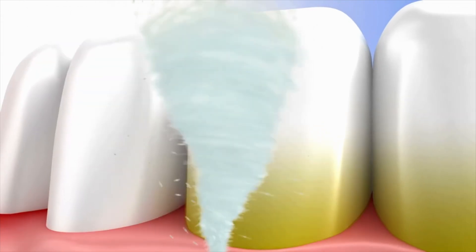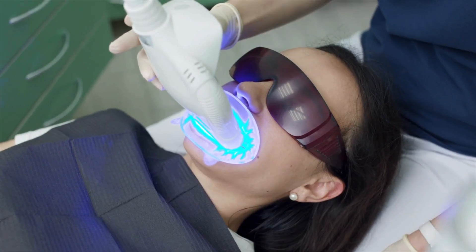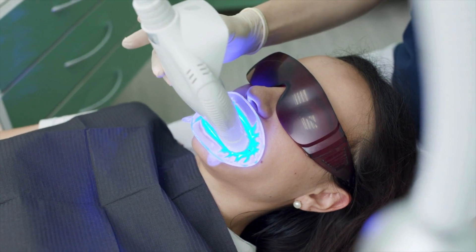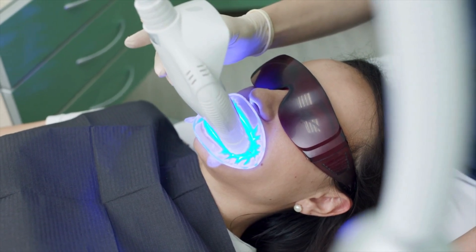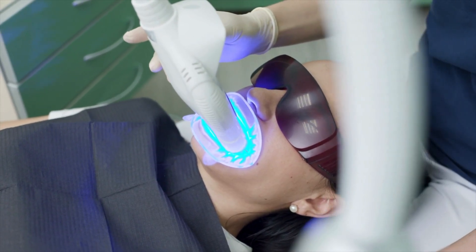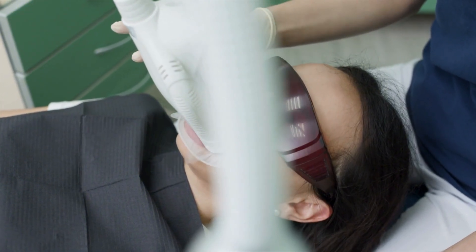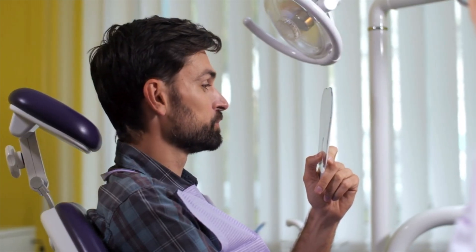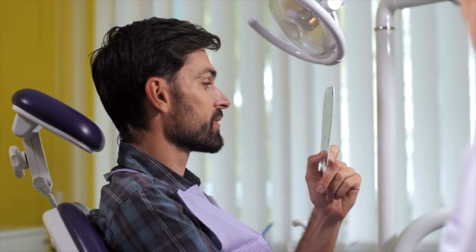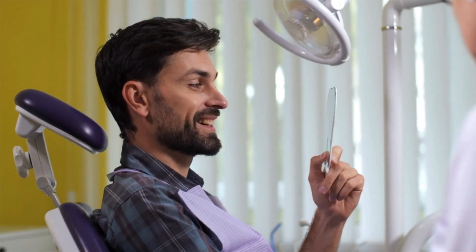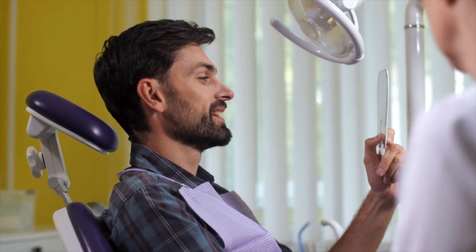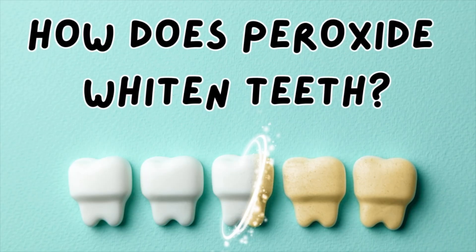In the teeth whitening or bleaching process, specifically when using a peroxide-based whitener like hydrogen peroxide, using this on the teeth involves a few steps which we're going to talk about today. We're going to discuss it in a bit of scientific detail so you know exactly how peroxide whitens your teeth.